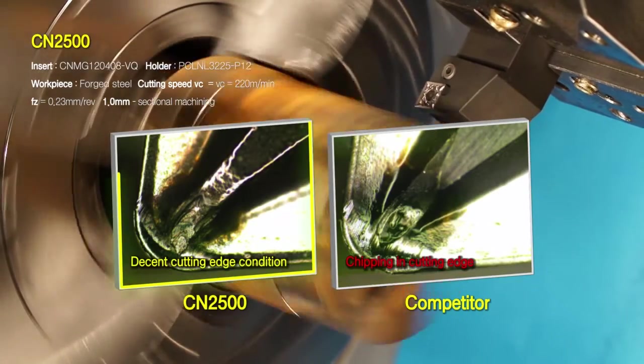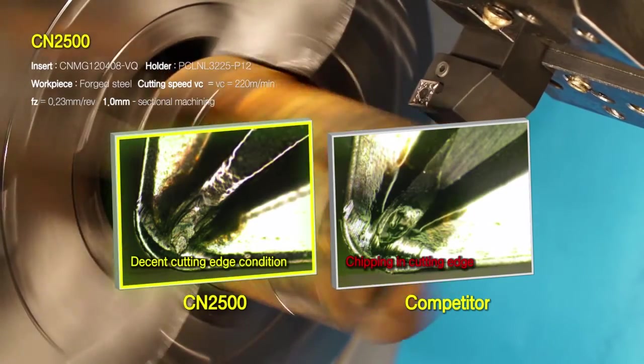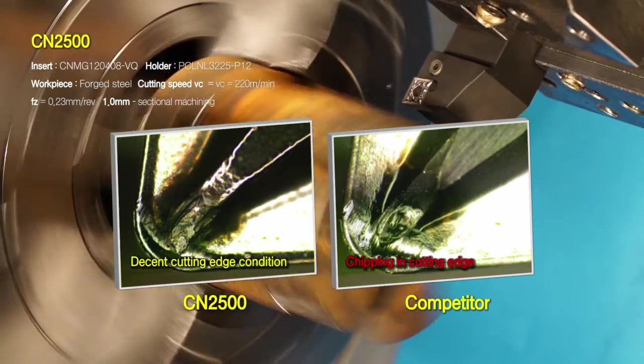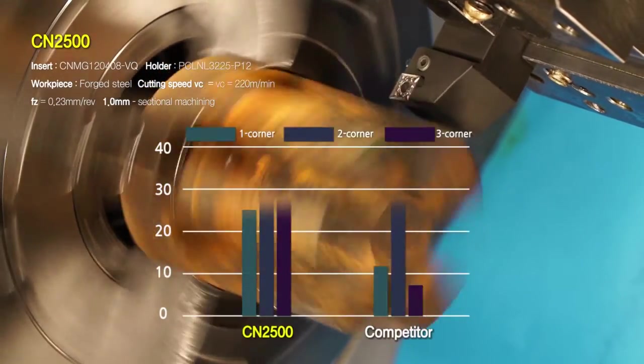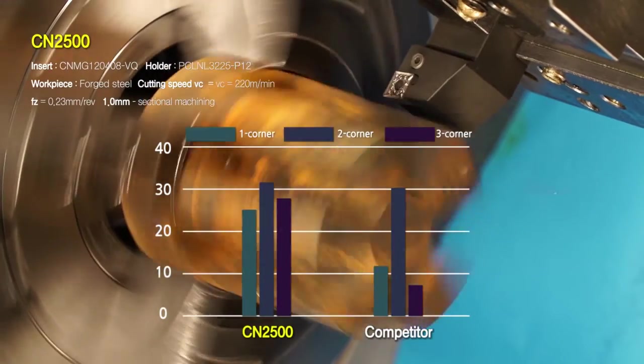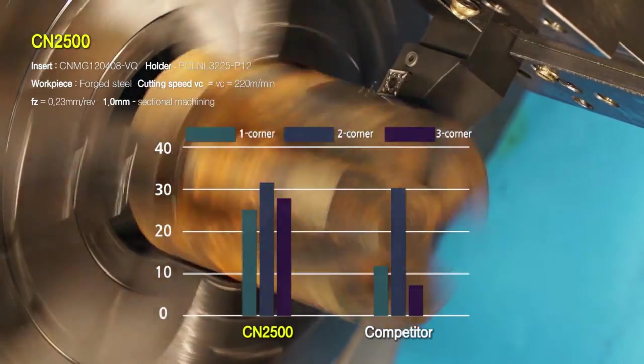A lower damage rate than the products of all major competitors. CN2500 shows little deviation between the corners and has significantly higher tool life, maximizing machining time for end users.